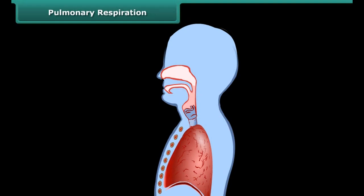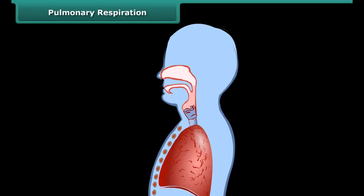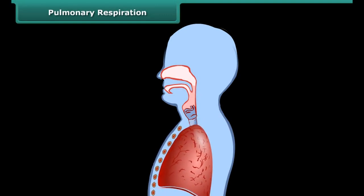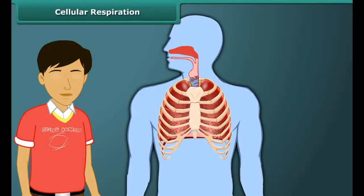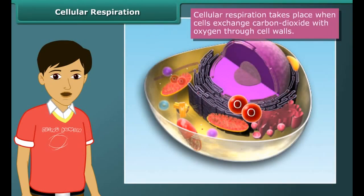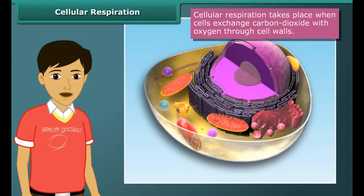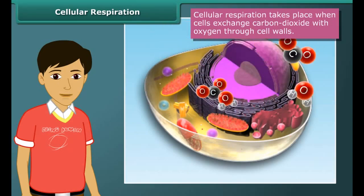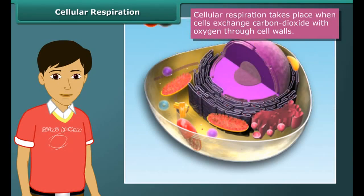Such visible breathing is known as external or pulmonary respiration. In internal or cellular respiration, cells present inside the human body exchange unwanted carbon dioxide with essential oxygen through cell walls.